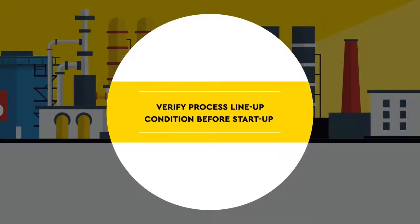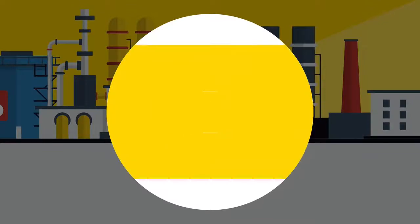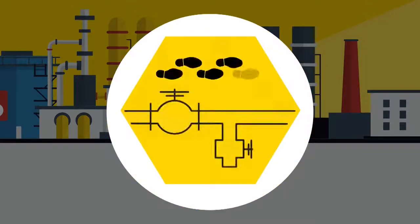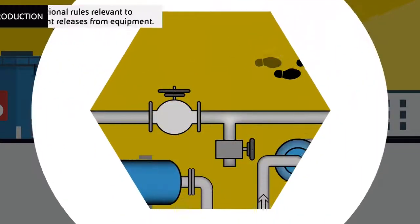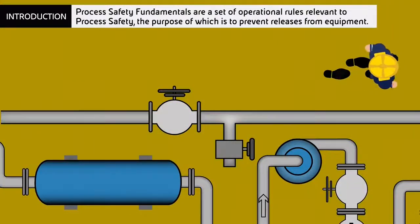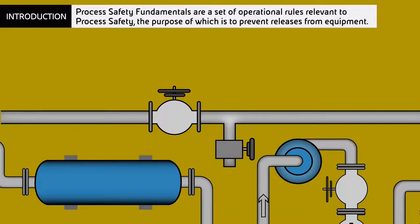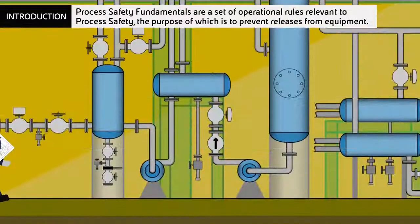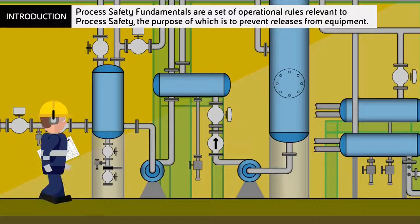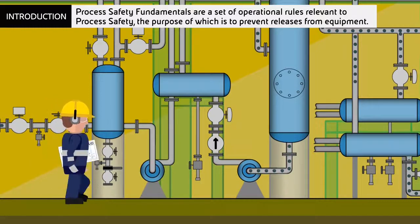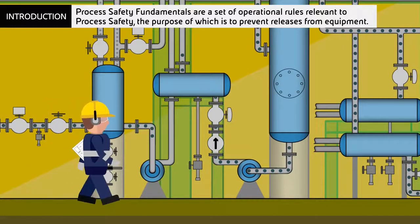Verify process line-up condition before start-up. Process safety fundamentals are a set of operational rules relevant to process safety, the purpose of which is to prevent releases from equipment.